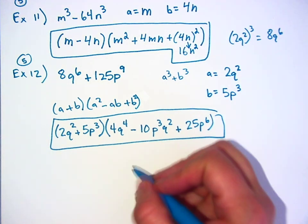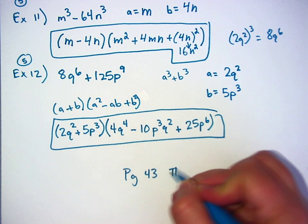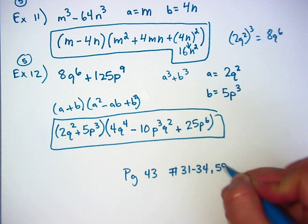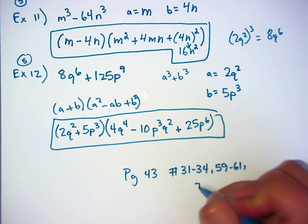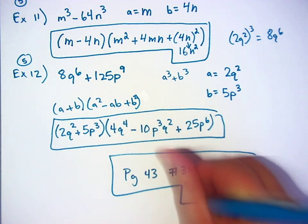So the rest of your homework is page 43, numbers 31 through 34, 59 through 61, and 75 through 77. And this plus yesterday's assignment is due tomorrow.